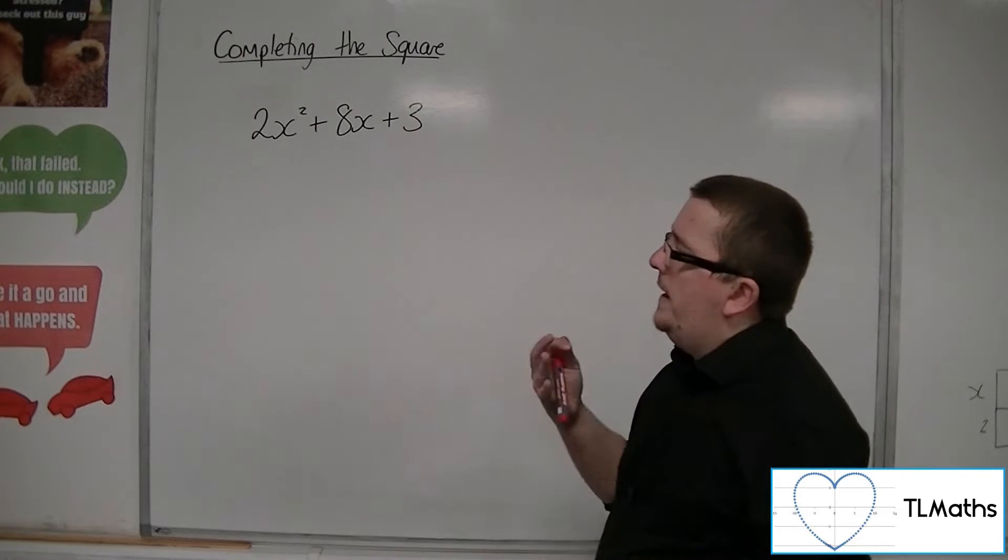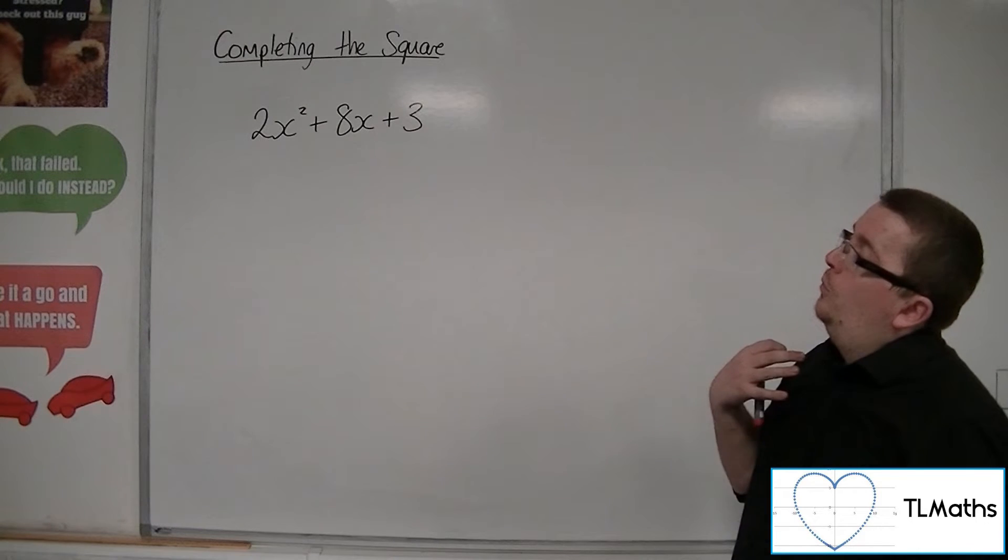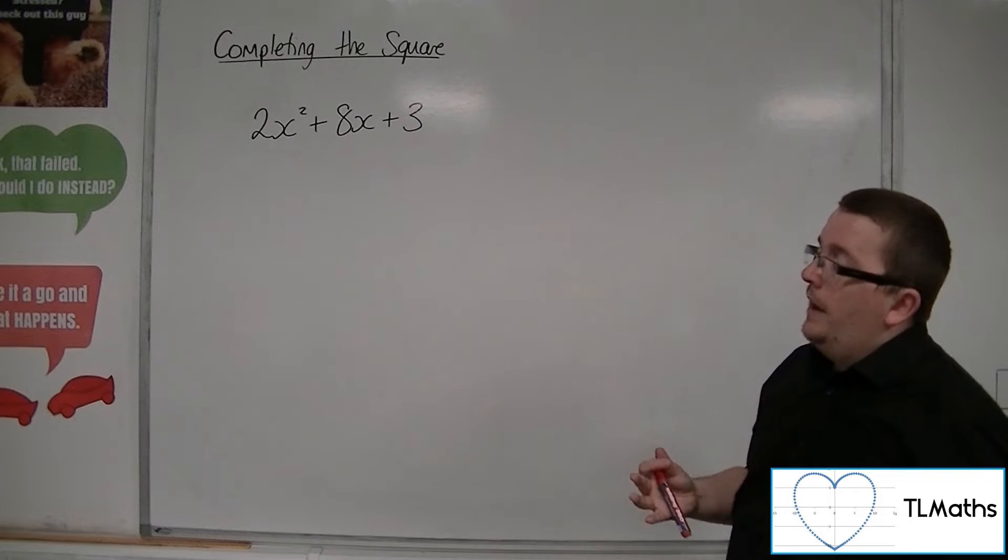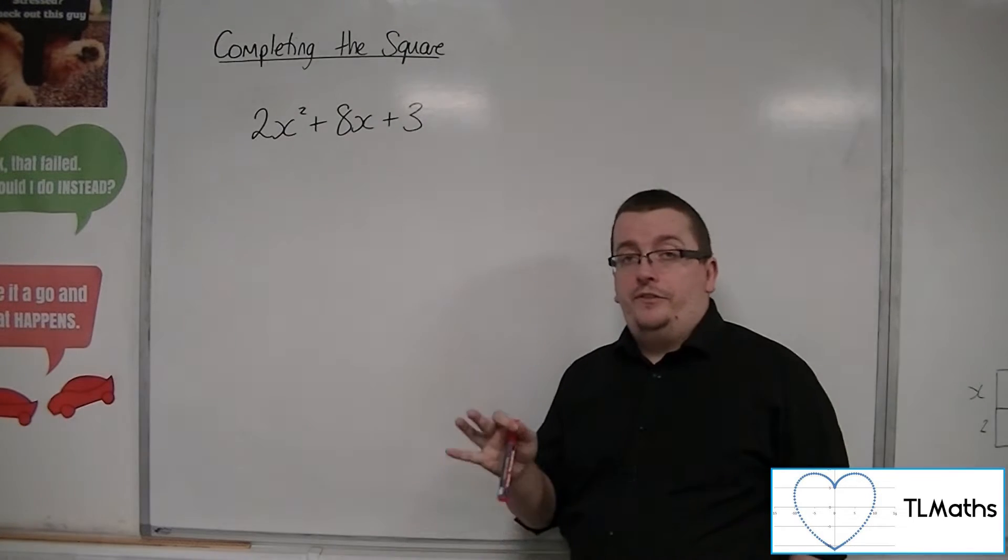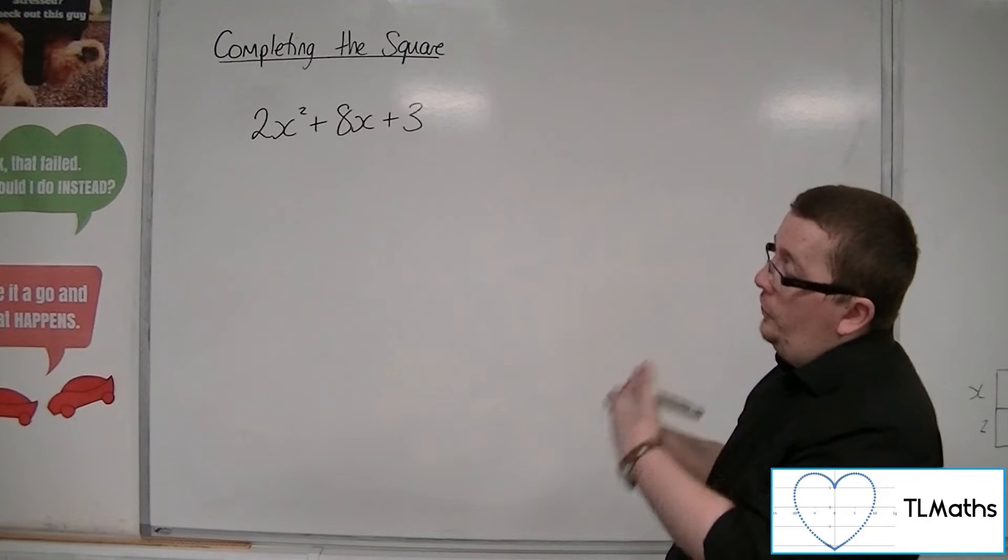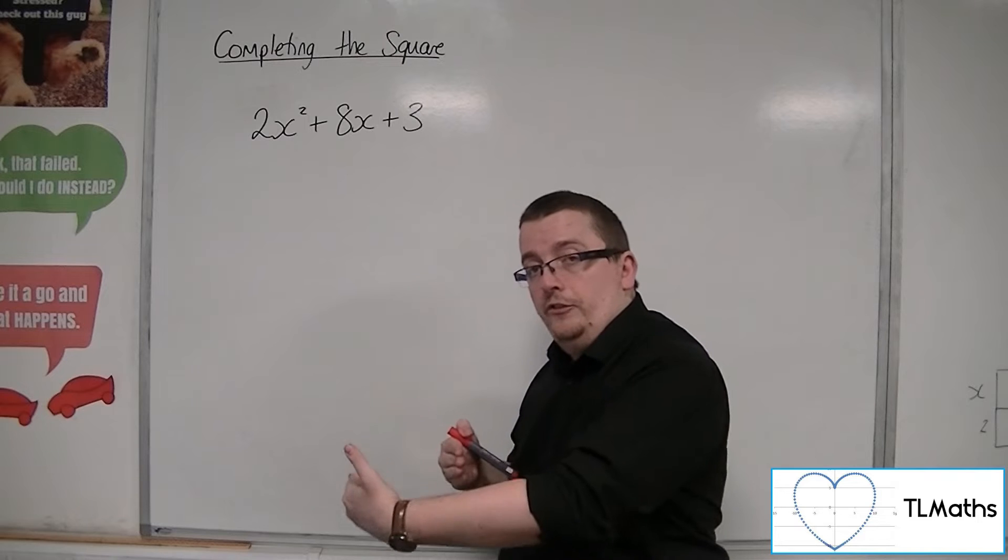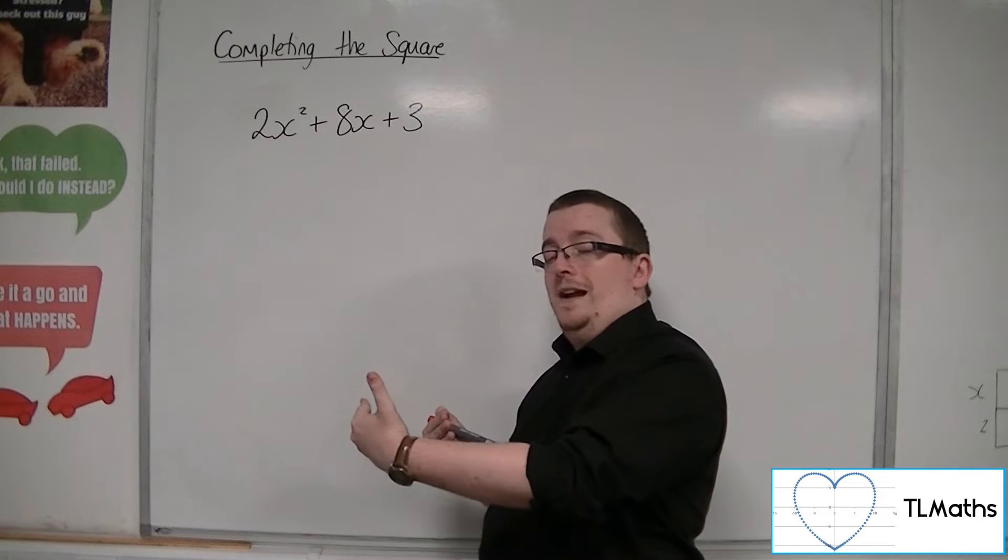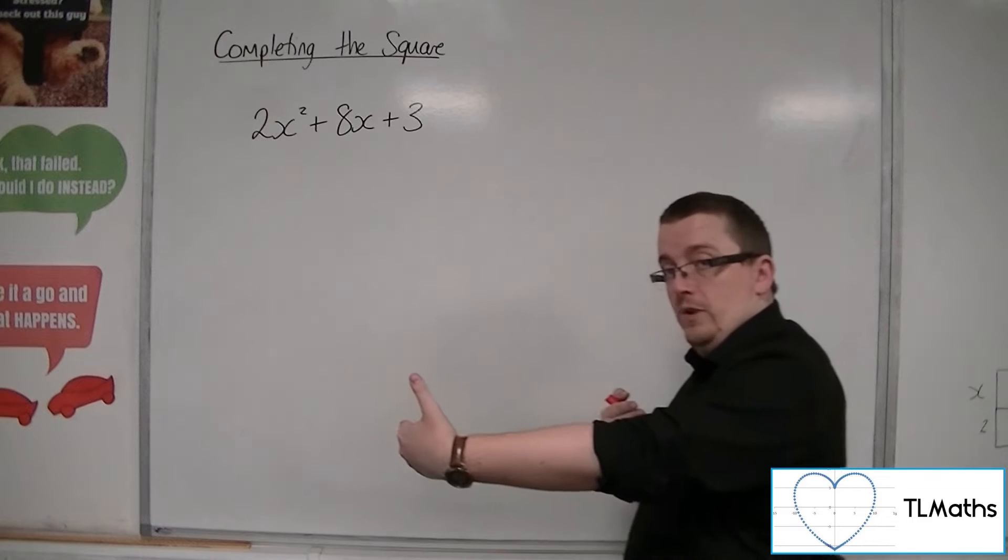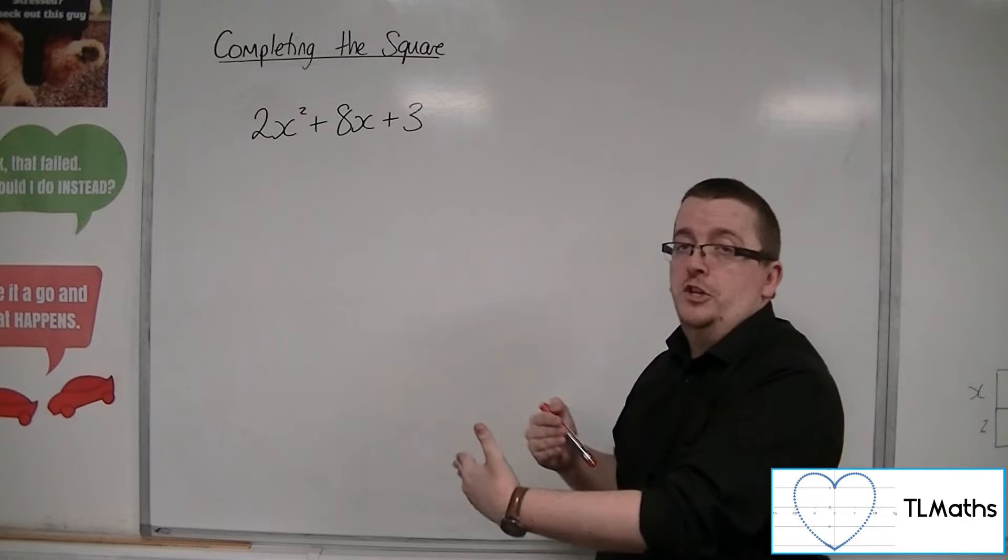You can still write it in completed square form. But what we've got to do first, and this is always going to be the first step, is that we factor out the 2 from the first 2 terms. Now some people will factor the 2 out of all 3 terms, but I only factor the 2 out of the first 2 terms.